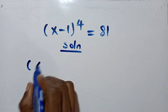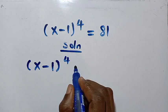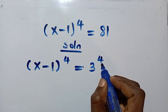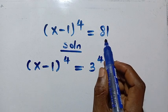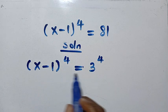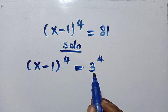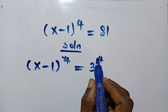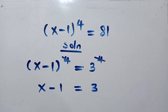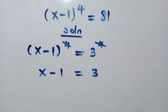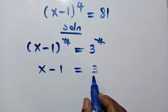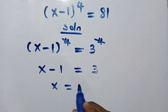We have x minus 1 to the power of 4 equals 81, which in exponent form is 3 to the power of 4 — because 3 multiplied 4 times gives 81. Then on both sides we have the same power but two different bases: here is x minus 1, and here is 3. Cancelling the power, we have x minus 1 equals 3, so x equals 4.